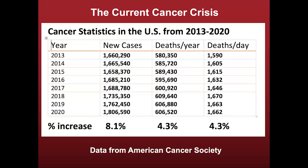I like to start my presentations with an overview of the current cancer crisis so that we can get a full appreciation of the challenges that we have. This chart, data from the American Cancer Society, shows the number of new cases, deaths per year and deaths per day from 2013 to estimated information from 2020. There is a significant increase in the number of new cases over the years, about a 4.3% increase in the number of deaths from cancer in the United States per year, and over 1,600 people a day dying from cancer during these periods. This is rather depressing and concerning information, stating that we have made little, if any, major progress in reducing cancer deaths over this period.